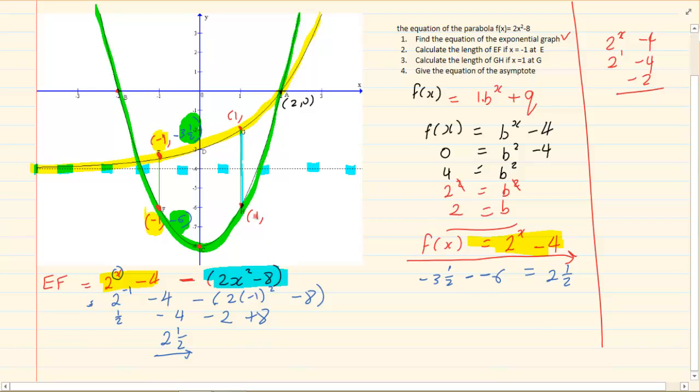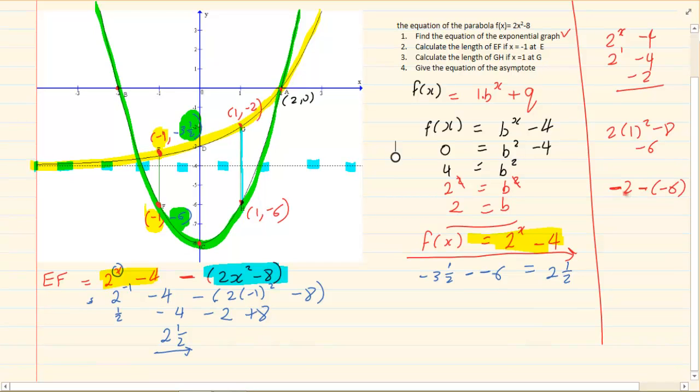Then I'm going to substitute H. H x is 1 but it is the parabola. So I'm going to say 2 into 1 squared minus 8 gives me minus 6. So now we have the coordinates. It's 1 and minus 2 and it's 1 and minus 6. How do I get the length? Top minus bottom. Can you see it's minus 2 minus minus 6. So we've got minus 2 plus 6, which is equal to 4.